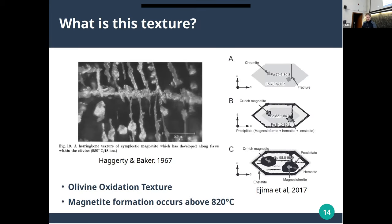I dug through the petrological literature to find out more. This idea goes back to a paper by Haggerty and Baker in 1967. Basically everything that has magnetite in it occurs above 820 degrees, but there are quite a few different phases that can form. This is similar to an example from an Ejima et al. paper, although they have more magnesium ferrite and some hematite. What ends up happening is that along fractures, you get oxidation in these olivines at high temperatures. You get a precipitate of an enstatite-type phase that is more silicate-rich and an iron oxide phase that is very iron-rich, and the resulting olivine is really depleted in iron and very enriched in magnesium.